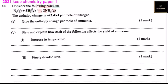Question number 10. We are told to consider the following reaction: nitrogen gas reacting with hydrogen gas to form ammonia gas. The enthalpy change is minus 92.4 kilojoules per mole of nitrogen.